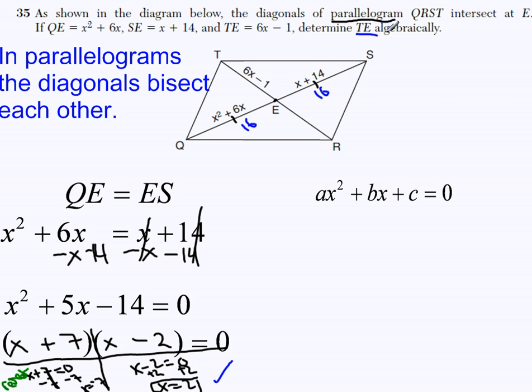Going back to the task at hand, determine TE algebraically. TE is represented by 6X minus 1. That's 6 times 2 minus 1. That's 12 minus 1. That's 11. TE is 11. Thank you for your time. I hope that helped.